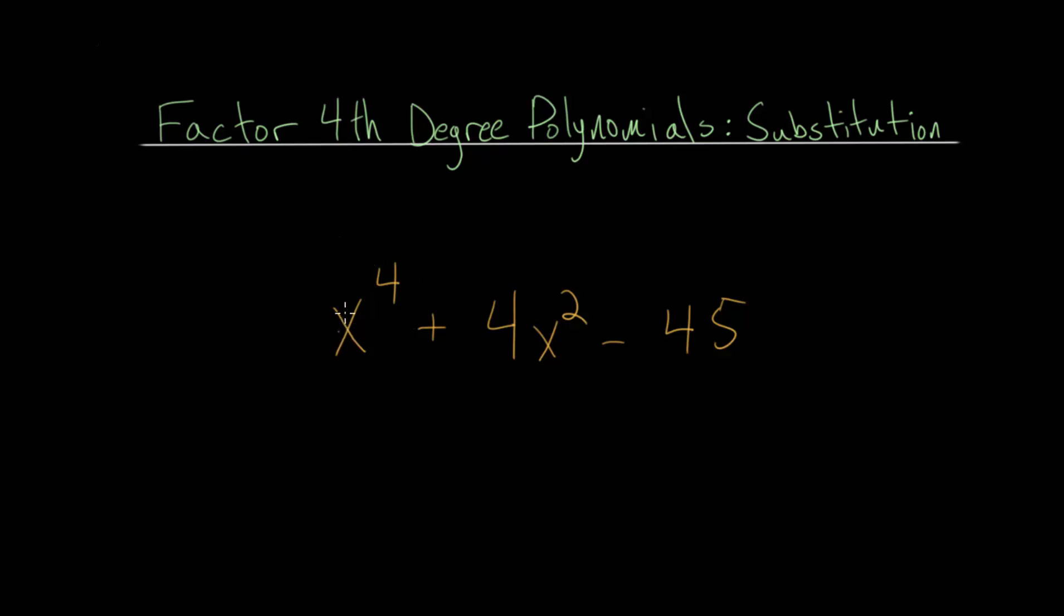When we have a special case of these fourth-degree polynomials where, in general, we have ax^4 + bx^2 + c, then this is factorable by a method of substitution. You might notice that this looks very similar to a quadratic, and we know how to factor quadratics.